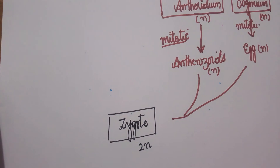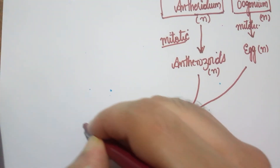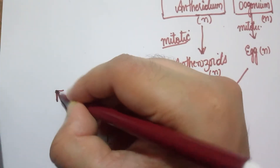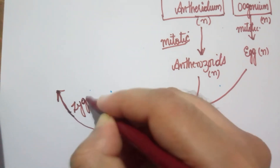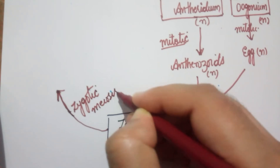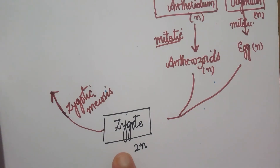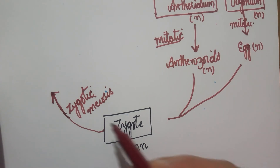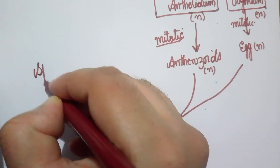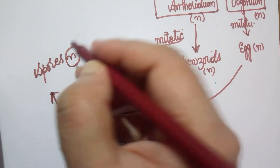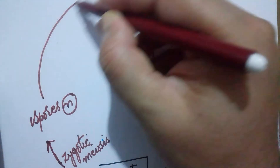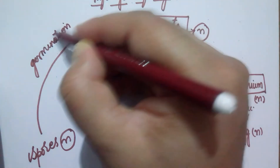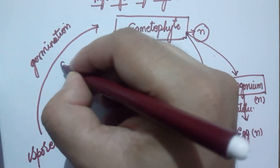This zygote is going to undergo zygotic meiosis — the zygote directly undergoes meiosis. There is no embryo formation here; the zygote does not undergo mitotic division. Since the zygote is diploid, upon undergoing meiotic division, it produces haploid spores.